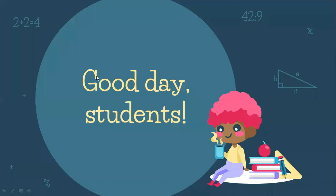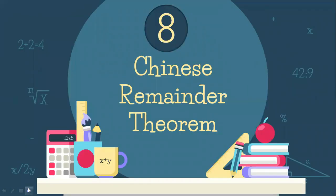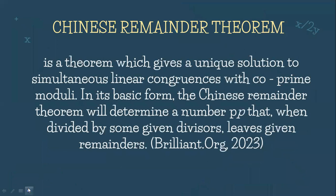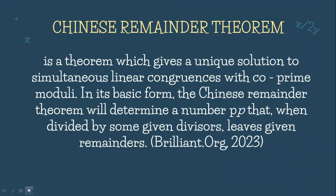Good day, my dear students! For today's video, we're going to talk about the Chinese Remainder Theorem. So, what is the Chinese Remainder Theorem? It is a theorem which gives a unique solution to simultaneous linear congruences with co-prime moduli.